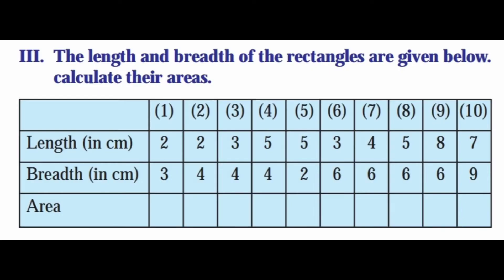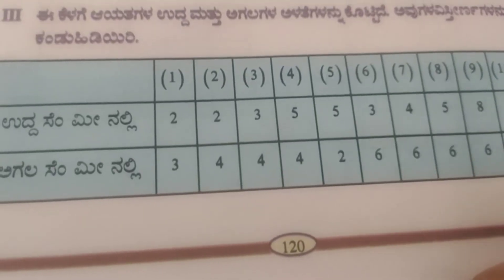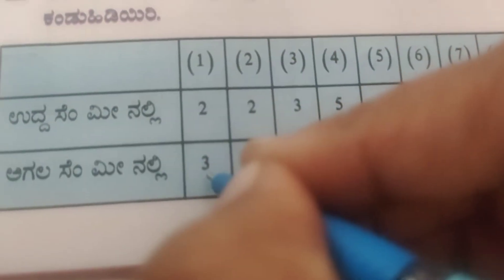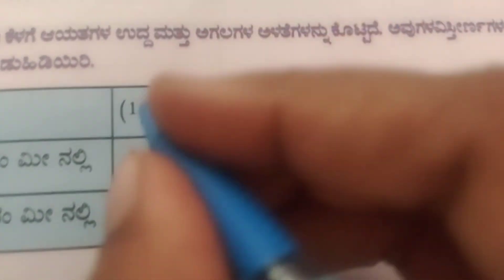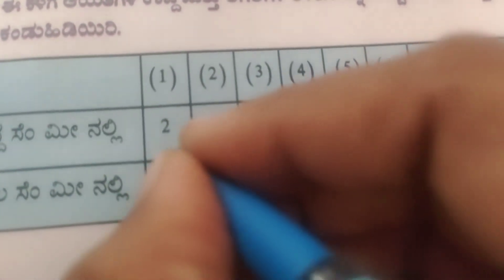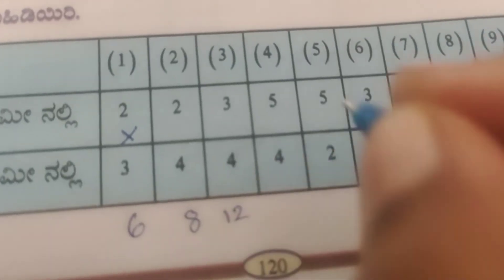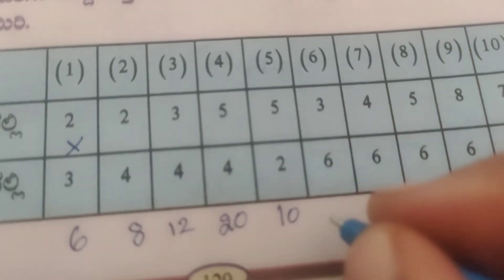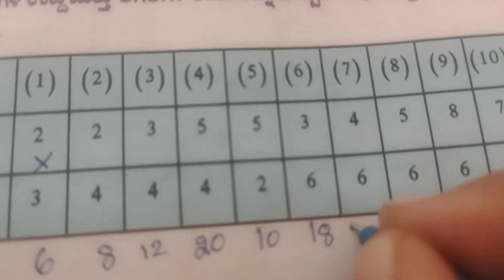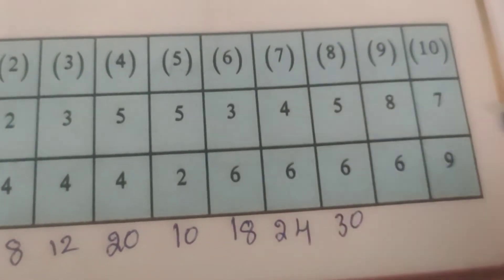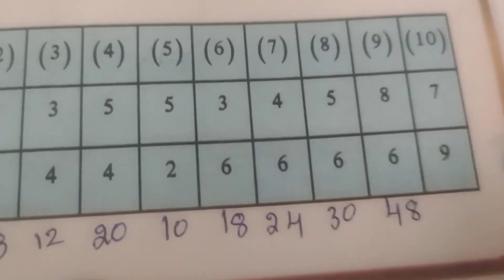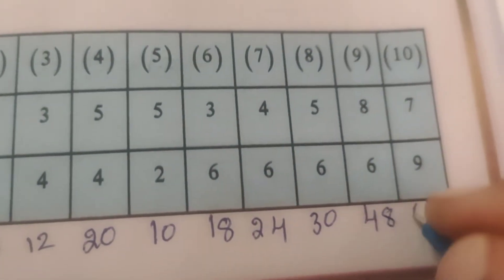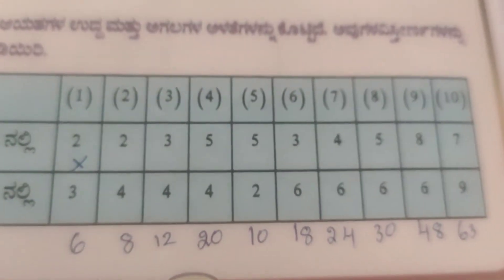Third: the length and breadth of rectangles are given below. Calculate their area using the formula area equals length into breadth. The products are: 2×3=6, 2×4=8, 3×4=12, 5×4=20, 5×2=10, 3×6=18, 6×4=24, 5×6=30, 8×6=48, 7×9=63. This is the same way to multiply.